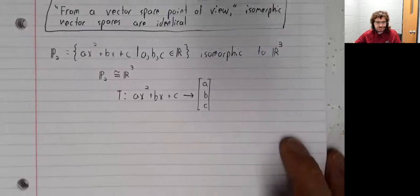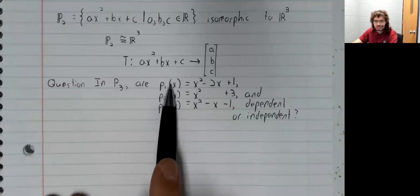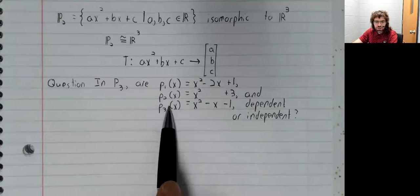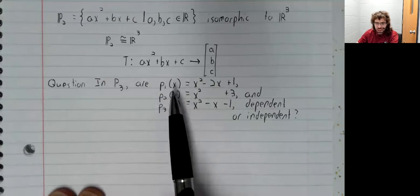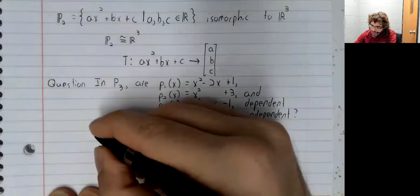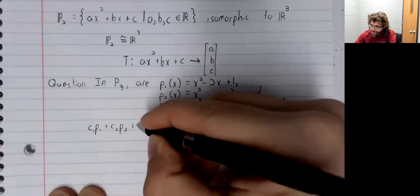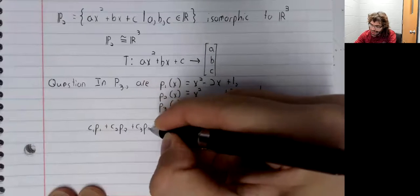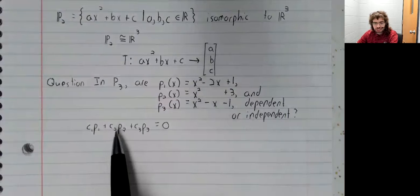And let's ask a question. Are these three vectors a linearly dependent or a linearly independent set? So what we're asking is, if we have a linear combination of these three vectors that's equal to zero, is this linear combination necessarily trivial?